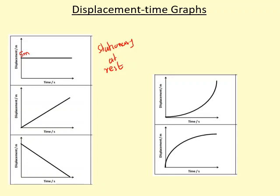So its velocity is zero. This one here, you can see its displacement is increasing by the same amount for each unit of time. So this means that it's moving at constant velocity, constant positive velocity, because the gradient is positive.